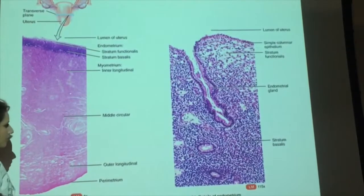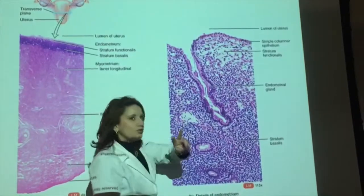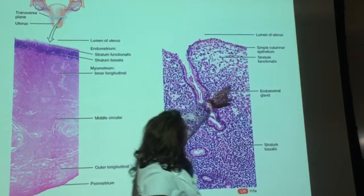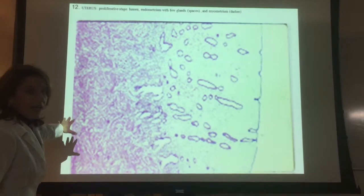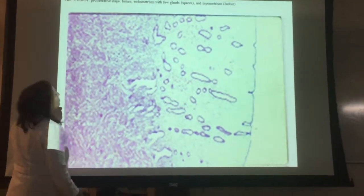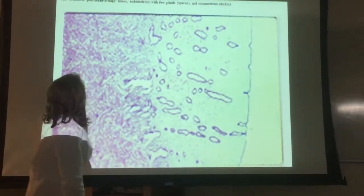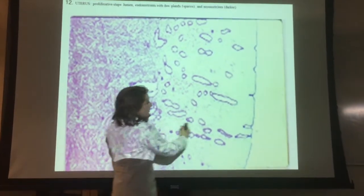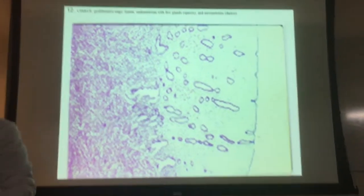Basically what you have here is the uterus. This is the endometrium, and you have two layers called stratum. You have stratum basalis and the stratum functionalis. The stratum basalis never goes away. The lumen is over here and the endometrium is this entire thing — you can see it's got some glands here. The endometrium is the functional part that will fall off during menstruation.